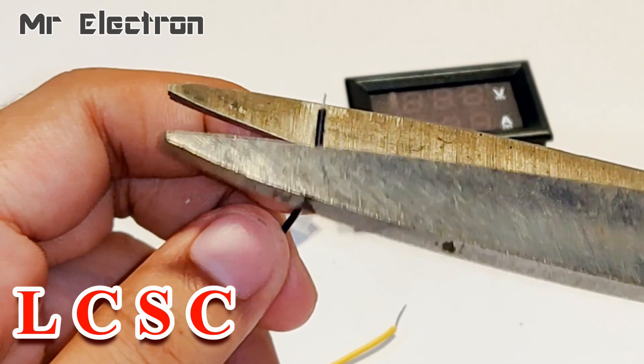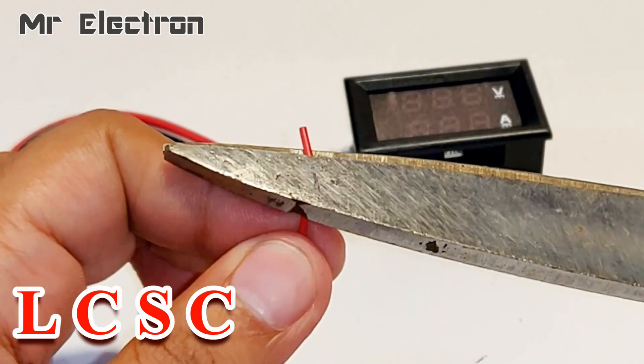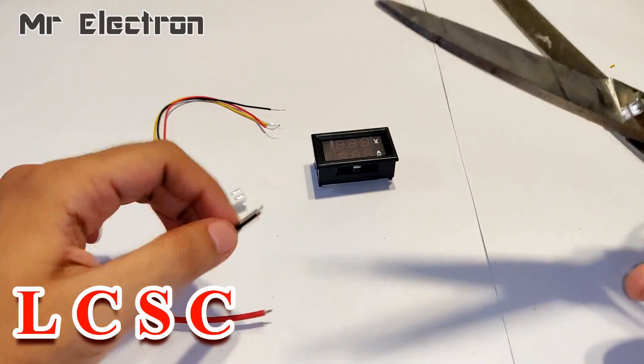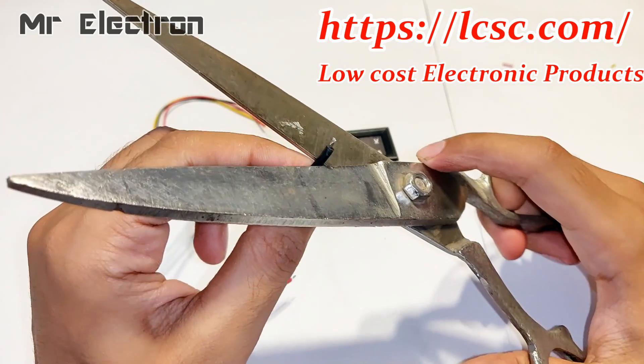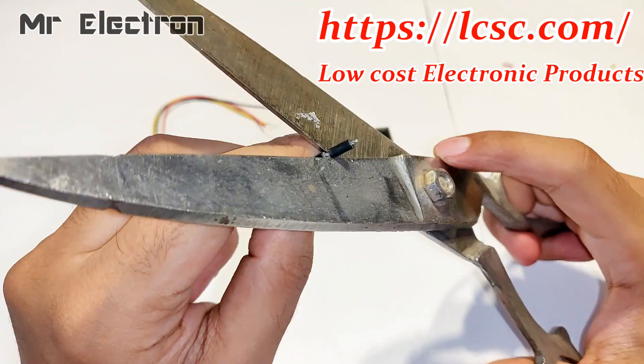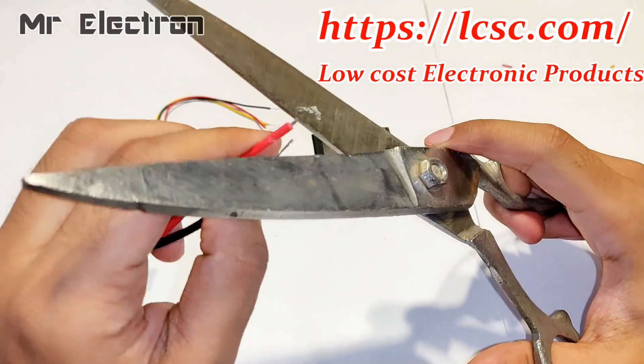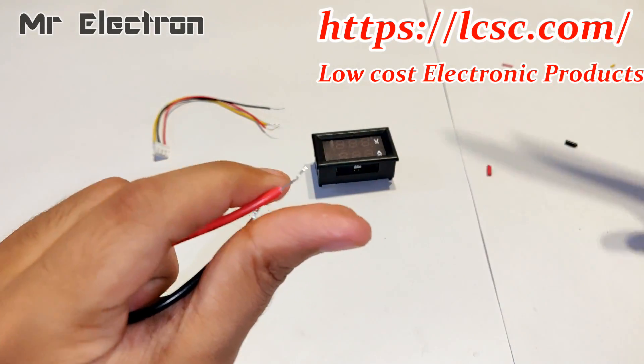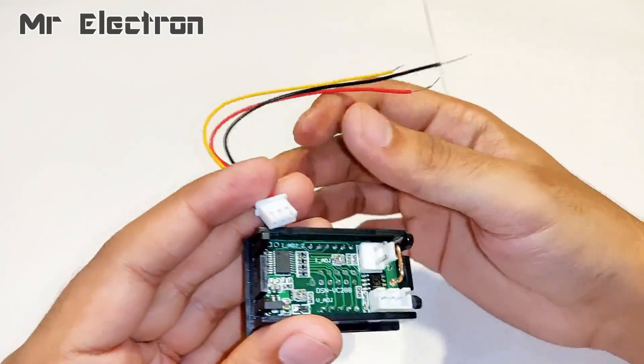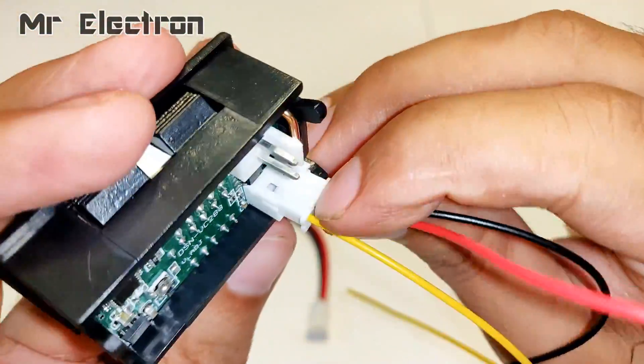This video is sponsored by LCSC, which is a Chinese company. LCSC has grown into one of the largest electronics component distributors in China with over 900,000 customers and they have a product range of 200,000 from semiconductors to resistors, capacitors, inductors, transistors, sensors, etc. In total they have around 3000 daily orders so don't forget to check them out. Link is in the description.